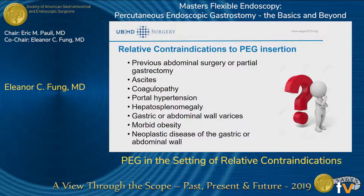A lot of these are actually related to complications from liver cirrhosis, which includes coagulopathy, putting patients at increased risk of bleeding, particularly in the stomach or GI tract. Hepatosplenomegaly is also a concern because a large liver and large spleen can distort the anatomy and sometimes completely overlie the stomach, not allowing a safe tract at all. Gastric or abdominal wall varices also put patients at increased risk of bleeding.